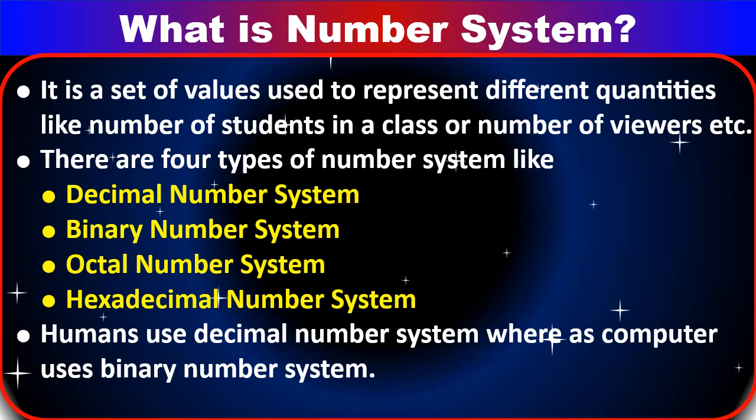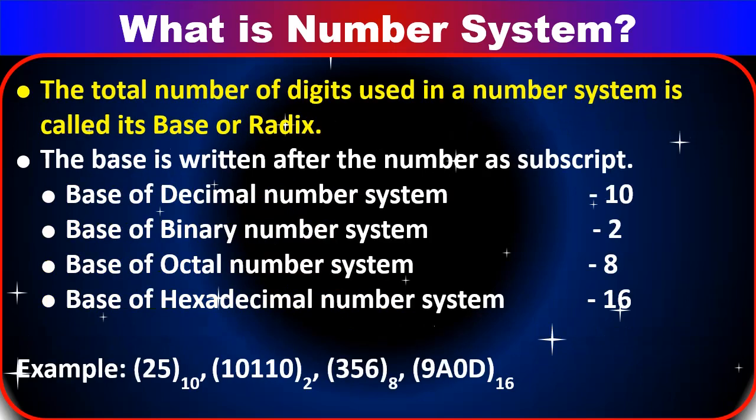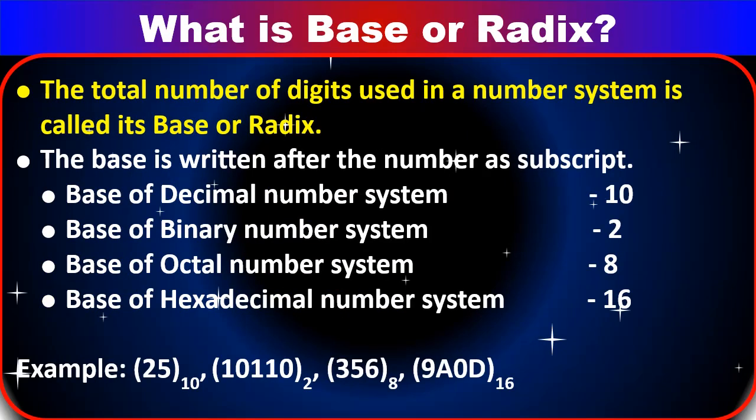There are 4 types of number system: decimal number system, binary number system, octal number system, and hexadecimal number system. Out of these 4 number systems, humans use the decimal number system, whereas computers use the binary number system. Next, what is base or radix? The total number of digits used in a number system is known as base or radix.